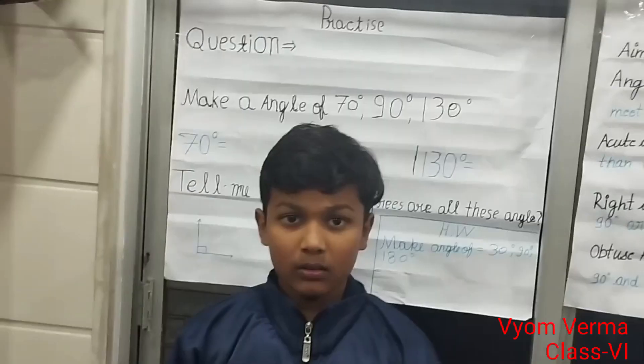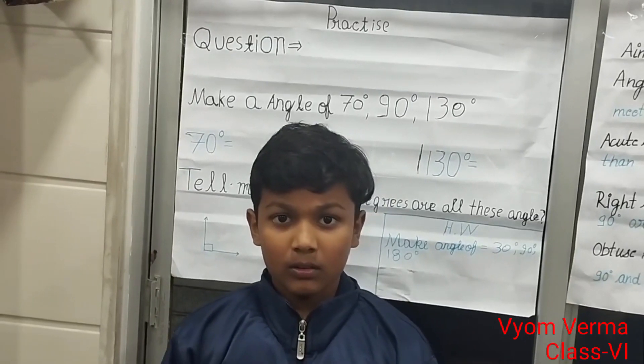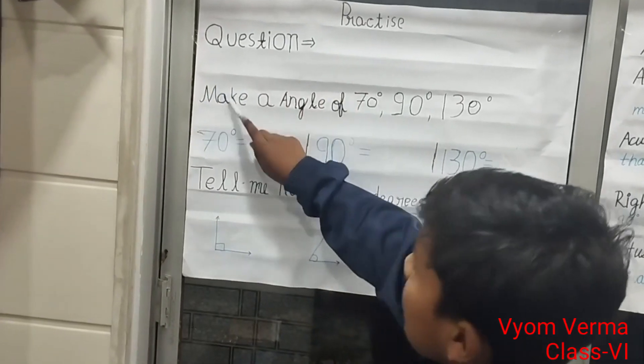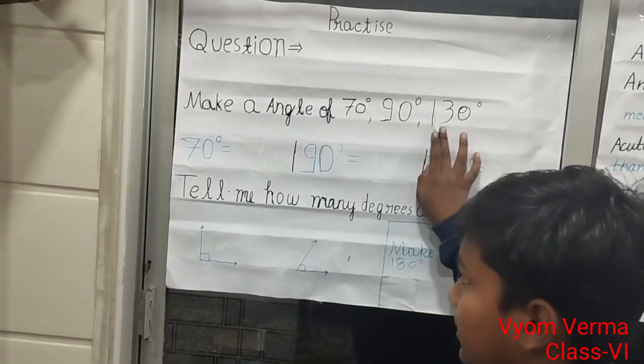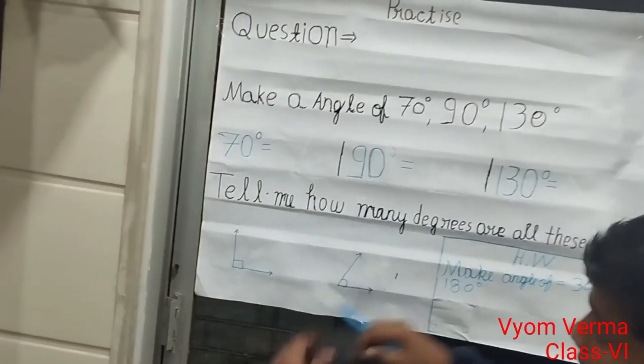So let's practice. Make an angle of 70 degrees, 90 degrees, and 130 degrees. Here you can see, here is the 70-degree angle.